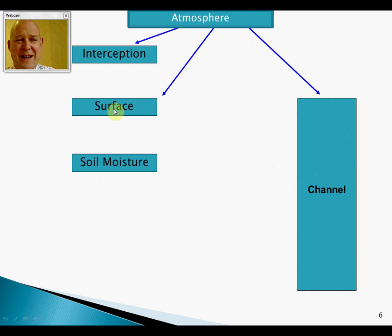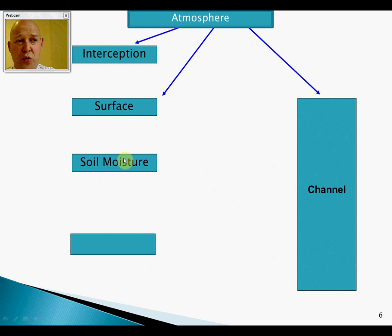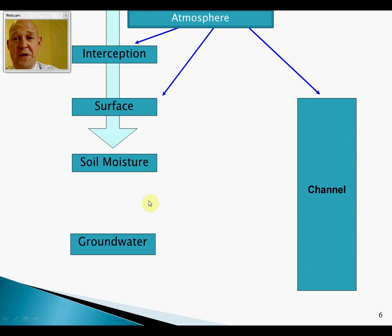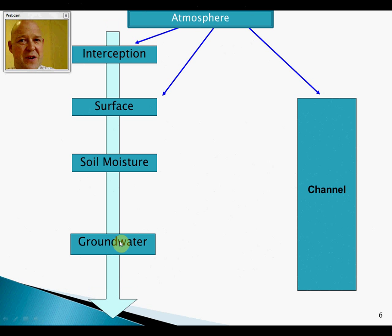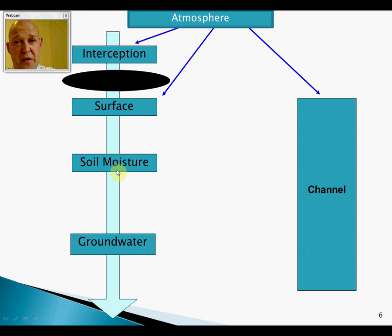Water moves vertically downwards into the ground — into the soil moisture store. If it's passed through the ground surface and infiltrated, it may percolate further down into the groundwater store. The difference: groundwater is saturated, meaning all pore spaces are full, while the soil moisture store has some voids with air in them — which is useful if you've got a respiring plant.